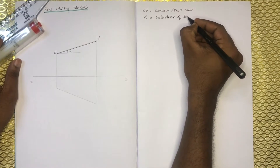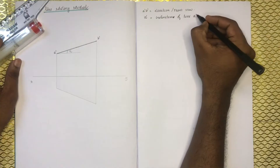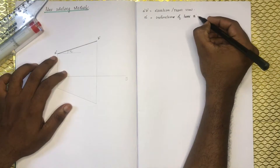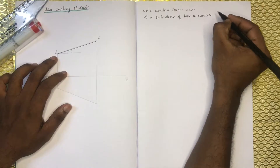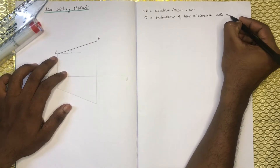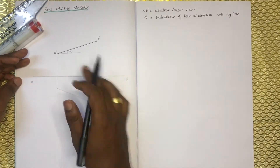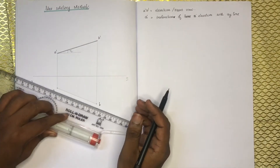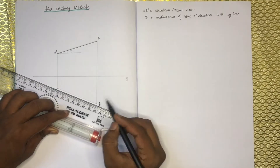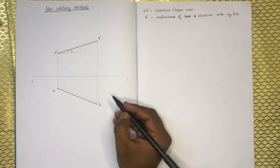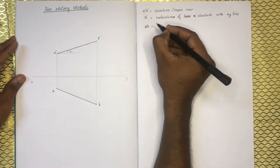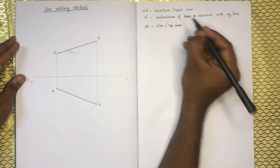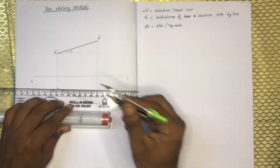The inclination of the line — we will write theta. The inclination of elevation with the XY line — we will write the plan AB. This is AB; it is actually the plan of the line. We will write the plan — that is AB, it represents the top view. The top view inclination is alpha.